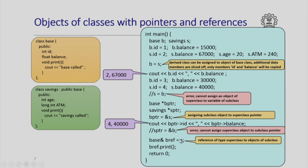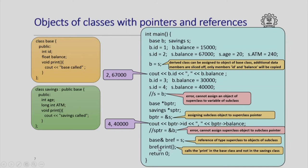What about assigning an object of the derived class to a reference of the base class? Because an object of the derived class can also be thought of as an object of the base class, this assignment is fine. It will set bref.id to S.id and bref.balance to S.balance, which in this case are 4 and 40,000. However, when I call the print function on bref — bref being a reference to the base class — the print function of the base class is going to get called, not the print function of the derived class, because the type of bref is reference to the base class.